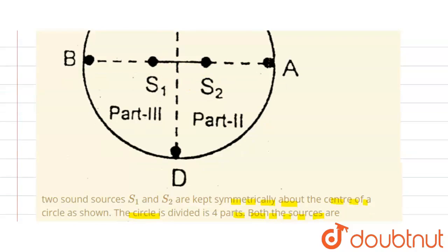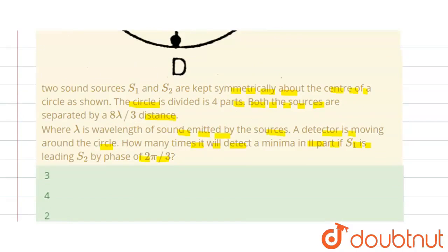So firstly here we can see that the circle is divided into four parts and both sources are separated by 8λ/3 distance.